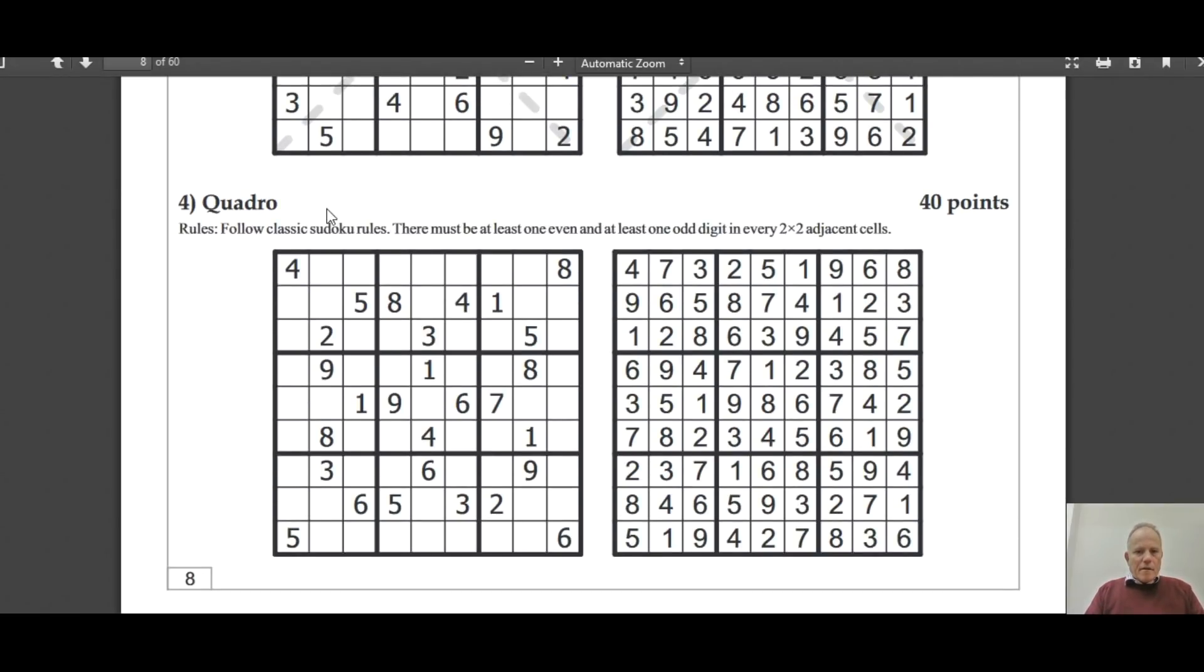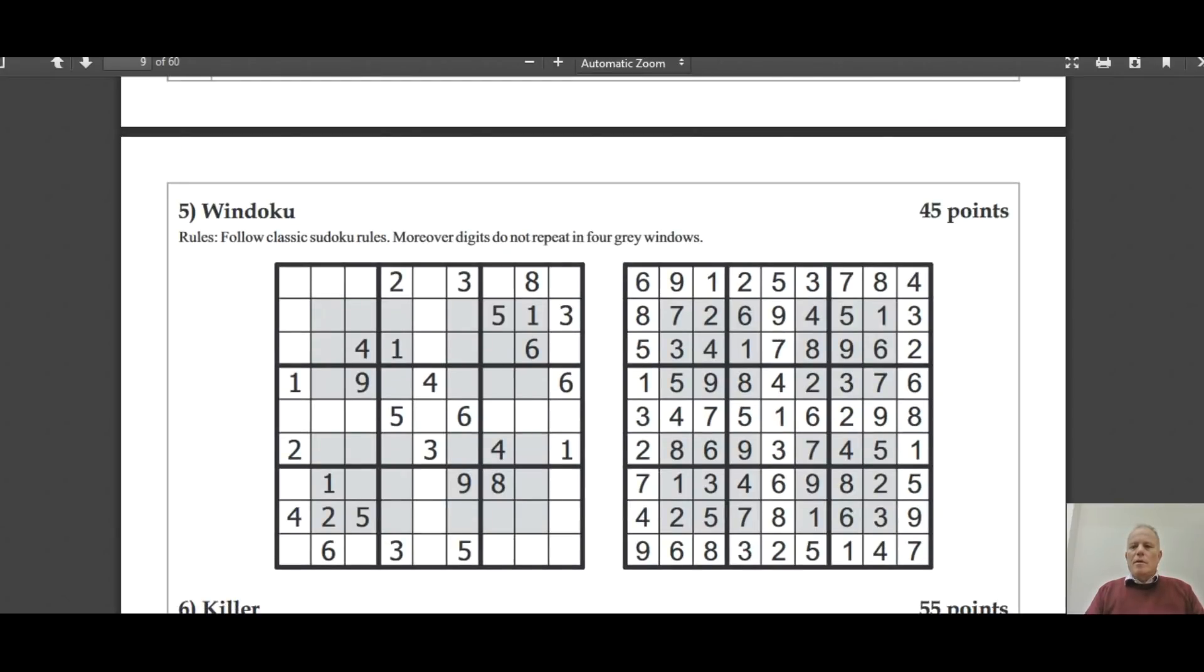This is an unusual one I think for a basic round, called Quadro. Within every two by two set of cells, you must have at least one odd digit and one even digit, which kind of rules out little blocks of four odds or four evens together. It's an unusual constraint. As you can see there's a lot of givens in the example, and I think that would have to be true in the real puzzle as well. You often have to decide with these puzzles whether you start using normal sudoku techniques and then move to the constraints a bit later, or whether you start with the constraints straight away.